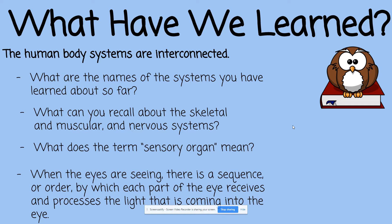When the eyes are seeing, there is a sequence or an order by which each part of the eye receives and processes the light coming into the eye. First, light has to pass through the cornea, then the pupil, then the lens, and finally it lands on the retina. When objects are projected on the retina, they are actually upside down, and it's the job of our optic nerve, connected to our brain, to translate or flip the image back upright so that we see it correctly.